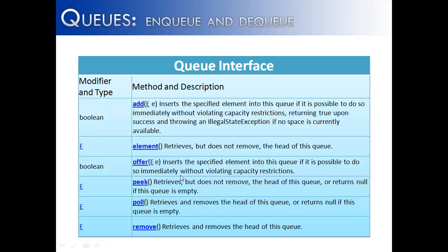Same thing with peek and element. Peek, if there is no head of a queue, it will return null. Whereas element, if there is no head, it will throw an error.